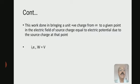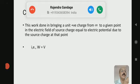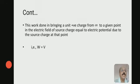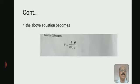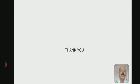This work done in bringing a unit positive charge from infinity to a given point in the electric field of a source charge is equal to the electric potential due to the source charge at that point. That is, W = V. Therefore the electric potential is: V = (1 / 4πε₀) × (q / r). Thank you.